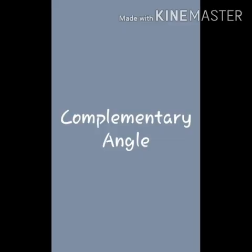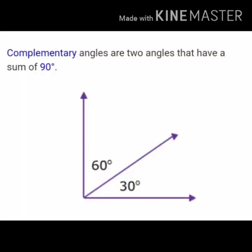Now, we will study what are complementary angles. Complementary angles are two angles that have a sum of 90 degrees. In the given diagram, there are two measures given: 60 degrees and 30 degrees. 60 degrees plus 30 degrees comes to 90 degrees. The sum of two angles that equals 90 degrees is called a complementary angle.